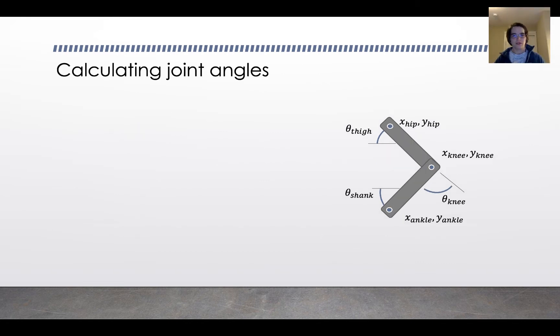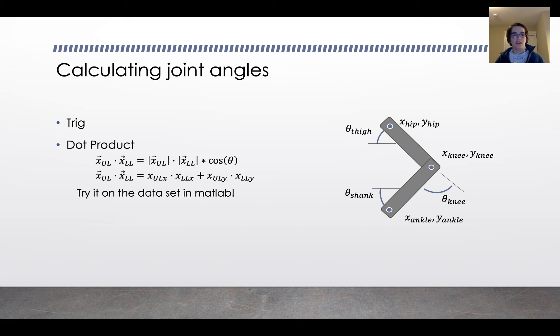Once you have the vectors, you can start calculating your joint angles using trig. The easiest way to make the computer do this with the trig is to use the dot product, which you can recall from previous classes like statics has these two different definitions. If you want a review of that, there's a number of videos out on YouTube. With the dot product, you can find the angle theta, and you can try it on our data set in MATLAB.